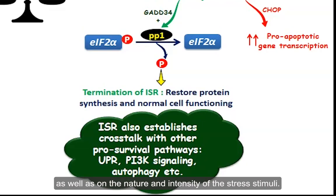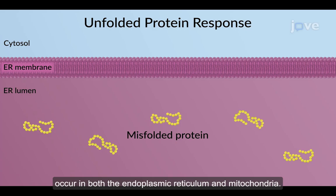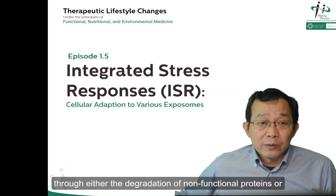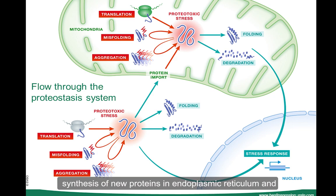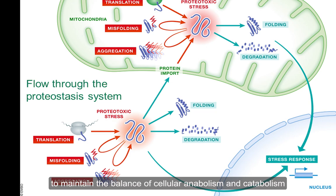As an important pathway in ISR, unfolded protein responses, or UPRs, occur in both the endoplasmic reticulum and mitochondria. These responses restore cellular homeostasis through either the degradation of non-functional proteins or synthesis of new proteins in the endoplasmic reticulum, and through mitochondria dynamics. Together, the endoplasmic reticulum and mitochondria work in concert to maintain the balance of cell anabolism and catabolism, to help cells survive through various stressors.